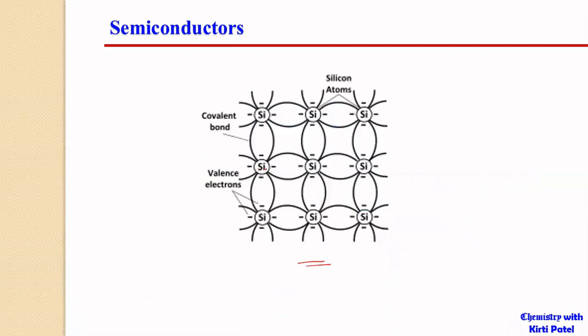The intrinsic semiconductor structure shows silicon or germanium atoms, which are tetravalent, forming bonds with four different silicon atoms. Each central silicon atom forms four covalent bonds by sharing electrons through overlapping orbitals. Each bond has two electrons — one shared by each silicon atom — and these are our valency electrons. When these valency electrons are promoted into the conduction band, they can be utilized for conduction of electricity.